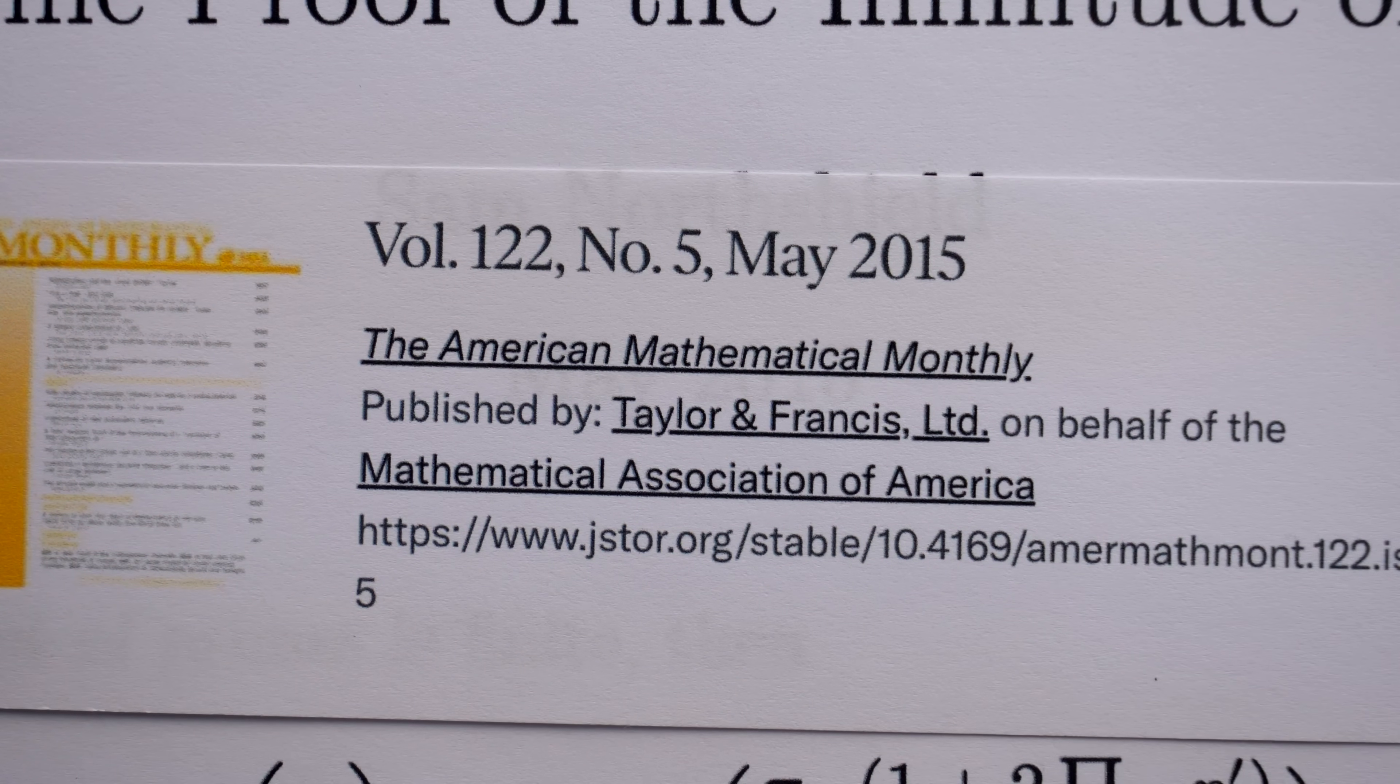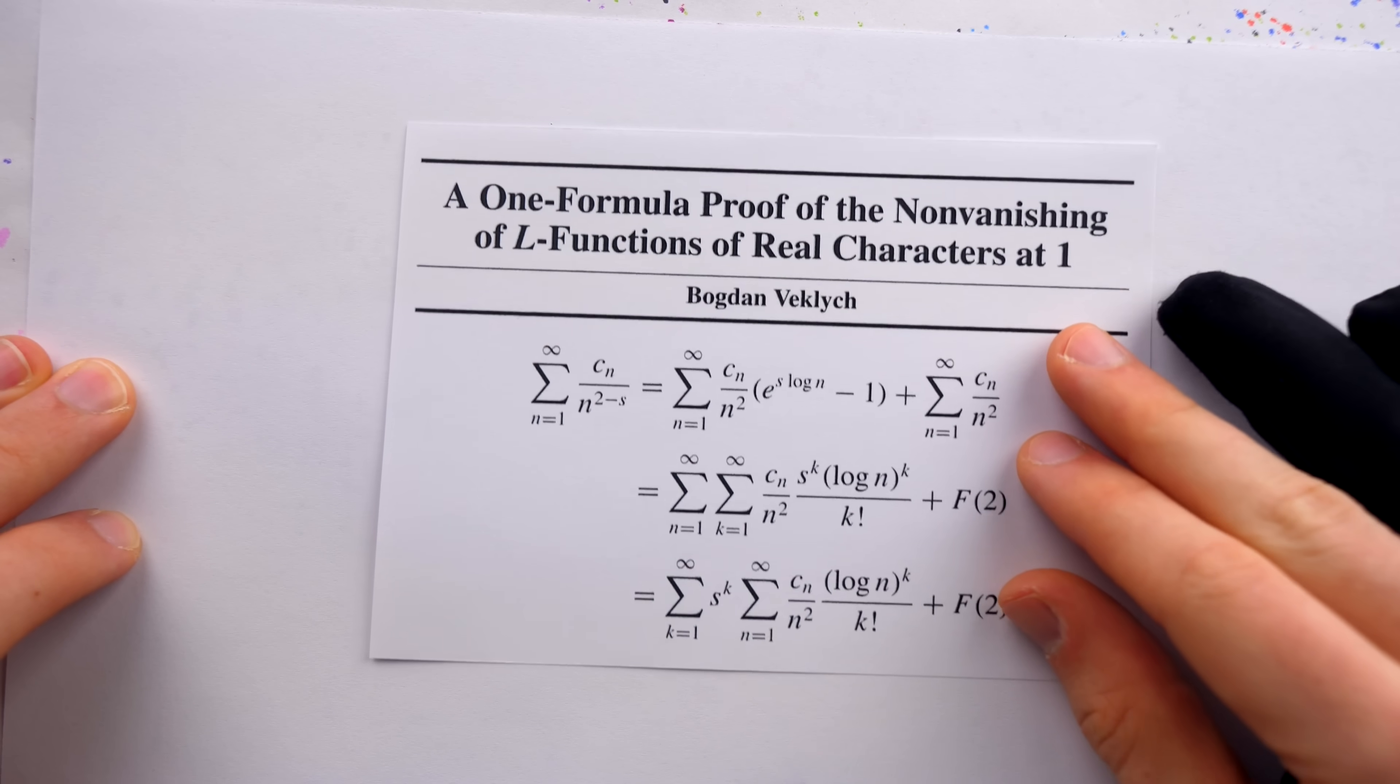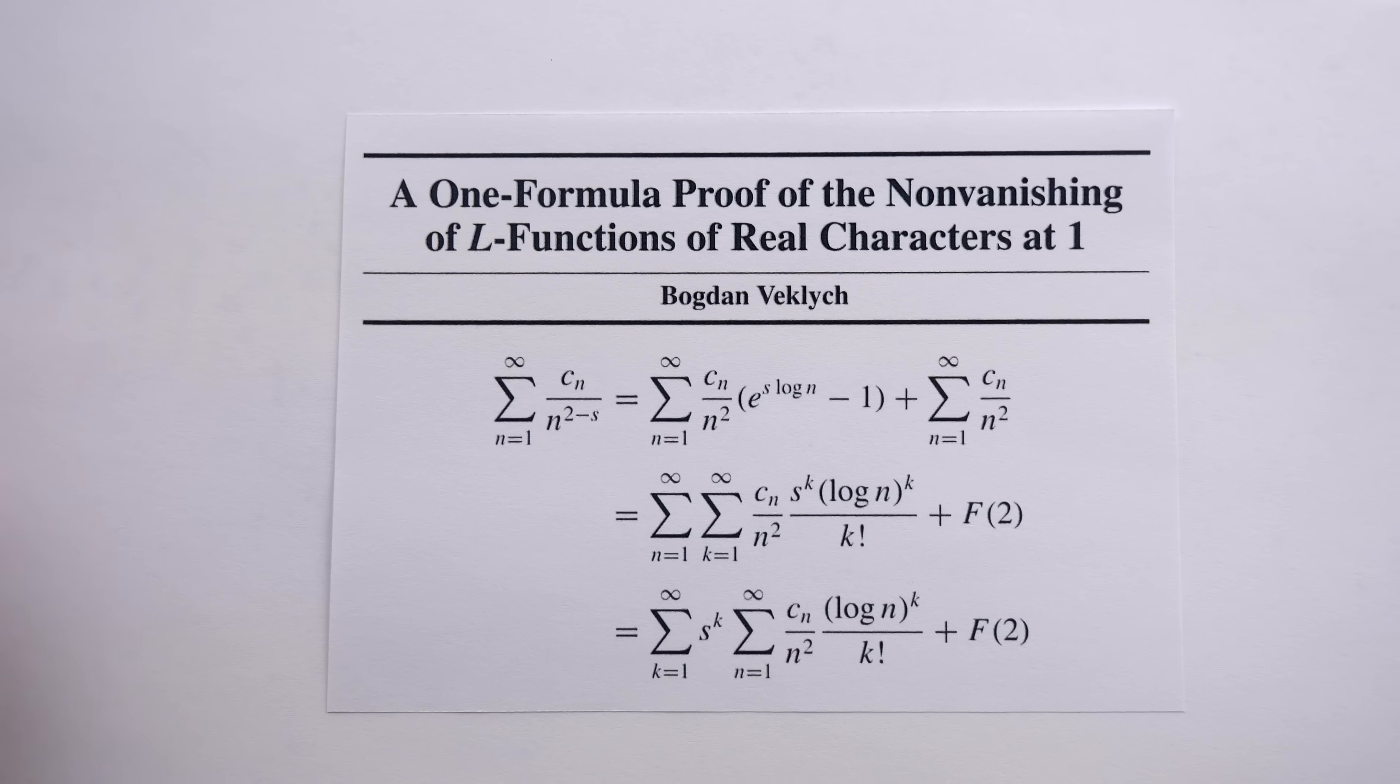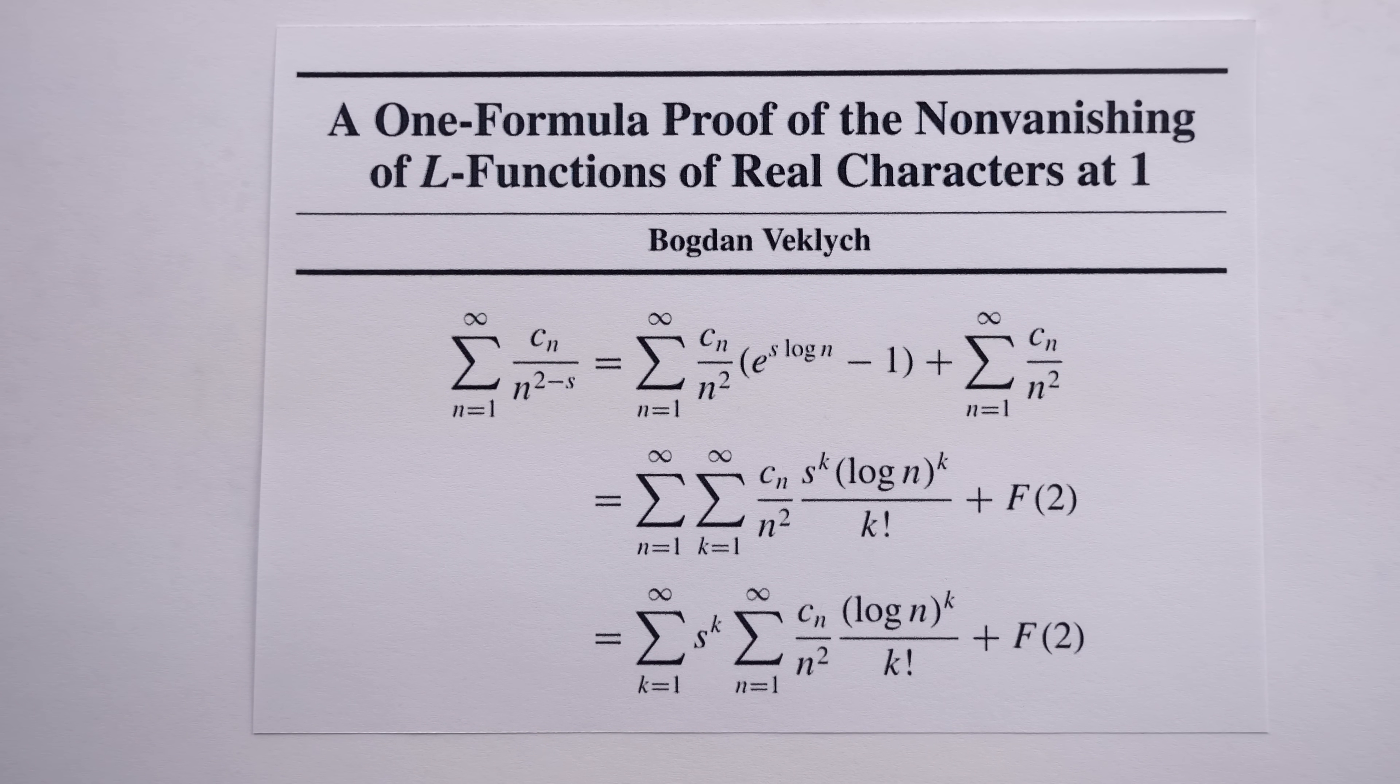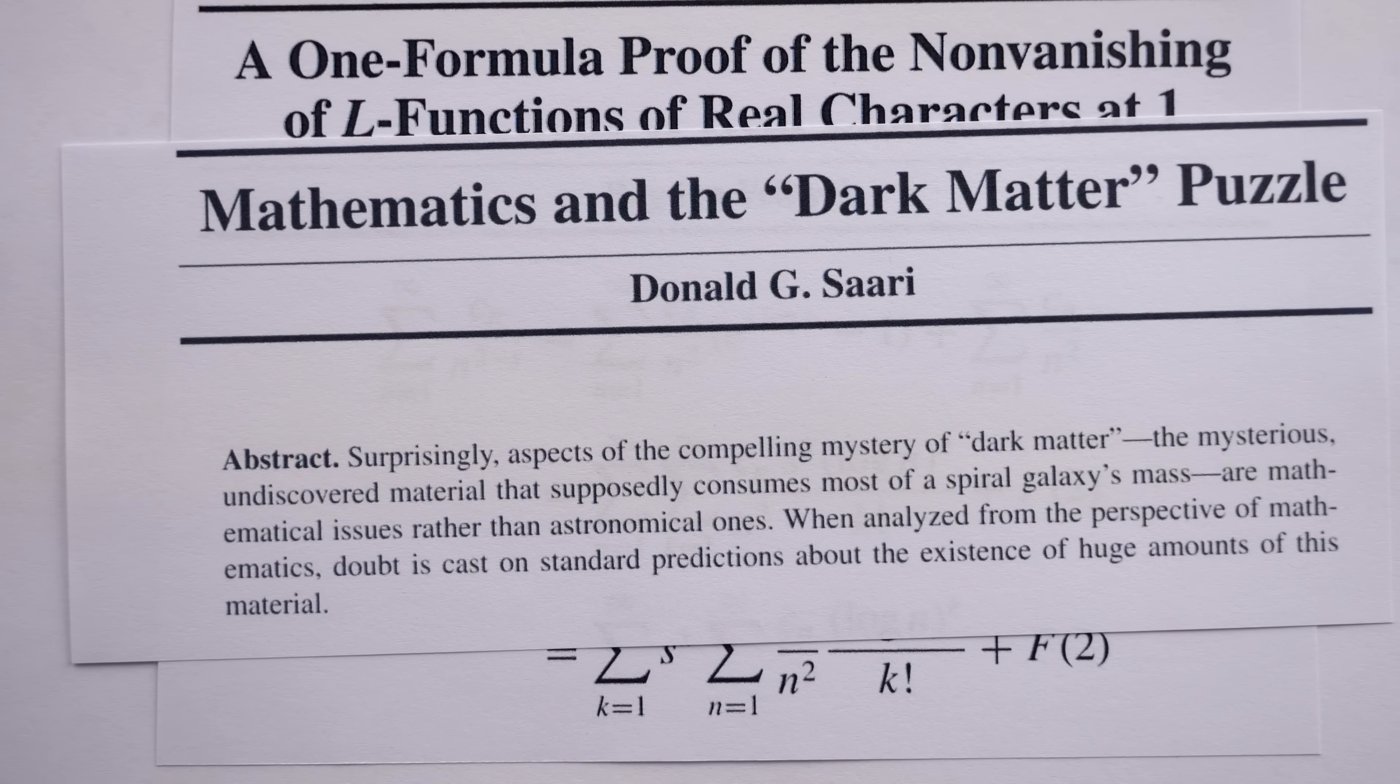In volume 122 of the delightful American Mathematical Monthly. Some other cool inclusions in this issue were a one-formula proof of the non-vanishing of L functions of real characters at one, and a mathematical analysis of dark matter.